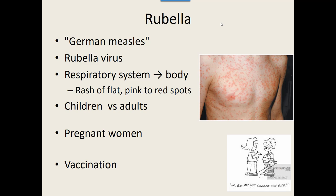One of the first symptoms that shows up is a rash of flat pink to red spots, usually about three days after infection. Children are generally not as seriously affected. However, adults can develop a deadly encephalitis or arthritis. Pregnant women who pick it up can develop various types of congenital birth defects — it's been known to cause blindness, deafness, heart abnormalities, and cognitive disabilities in infants born to pregnant women who had it.